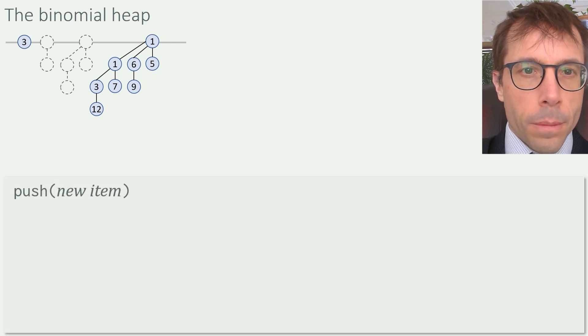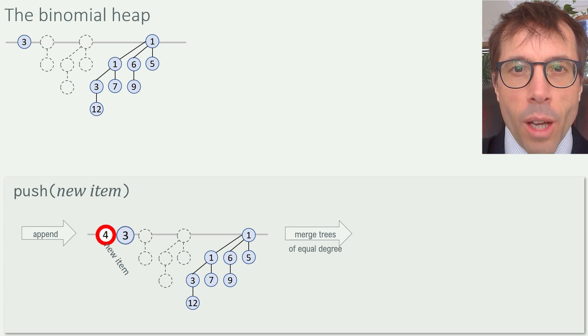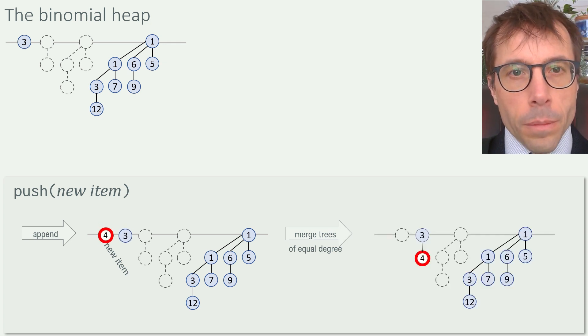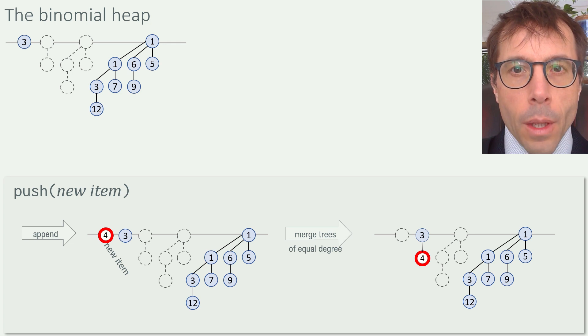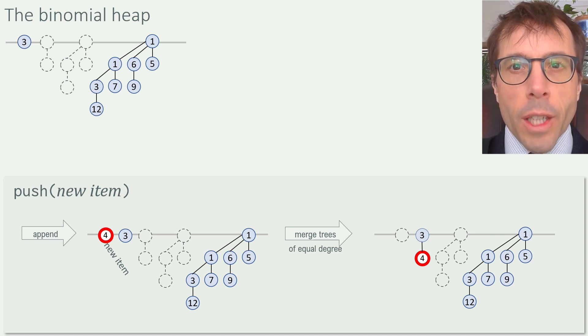Let's see how they work, starting with push. To push a new item, we just plunk it into the list of trees. But it's messed up our binomial heap. Now we have two trees of the same degree, namely zero, which we're not allowed. To fix the problem, we can just merge these two trees together, like so. We took two trees of degree zero and merged them to make a tree of degree one. Just note how we merge them. We put the four underneath the three. That's the way they have to go to satisfy the heap condition. And now, in this particular case, we're done. If there were already a degree one tree here, we'd have had to do another merge and keep merging until we recover a proper binomial heap, no more than one tree of each degree.